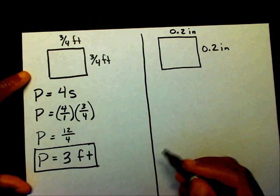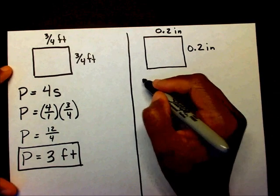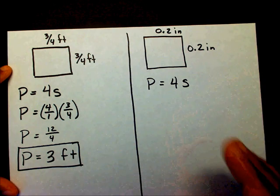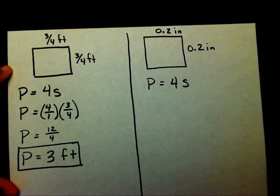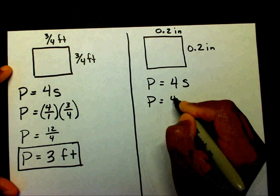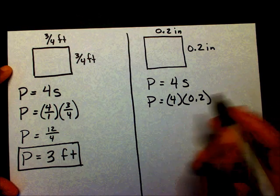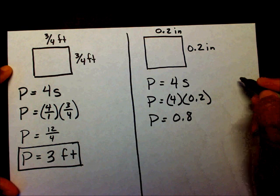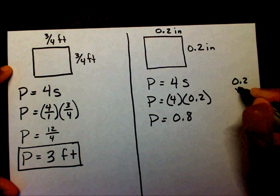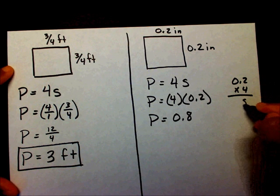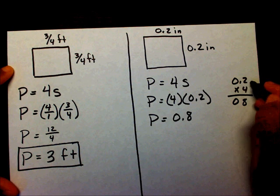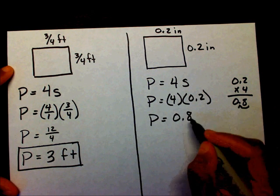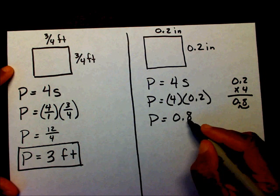Now for the decimal problem. I always write the formula down first: p equals four times s. So p equals four times zero point two. To multiply: four times two is eight, four times zero is zero. I have one number to the right of the decimal, so I move it one space, giving me zero point eight. So my perimeter is zero point eight, or eight-tenths inches.